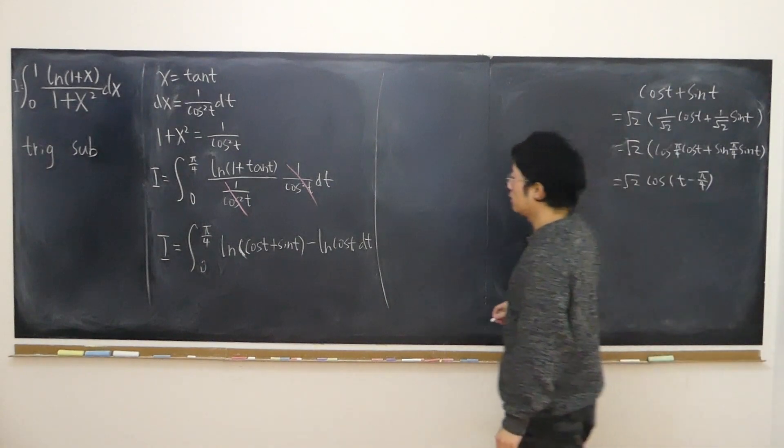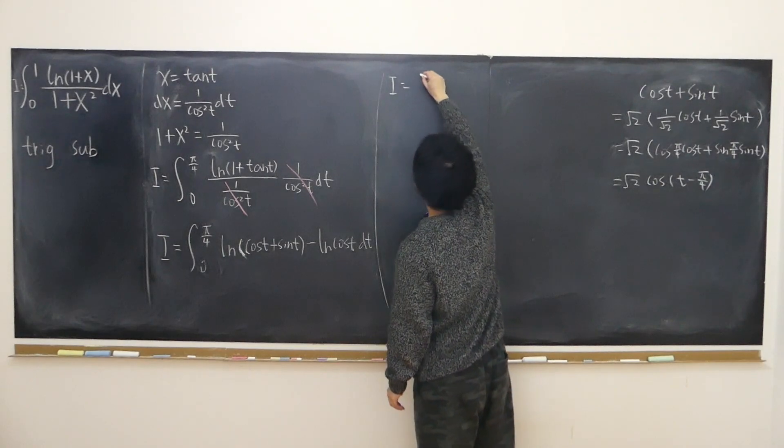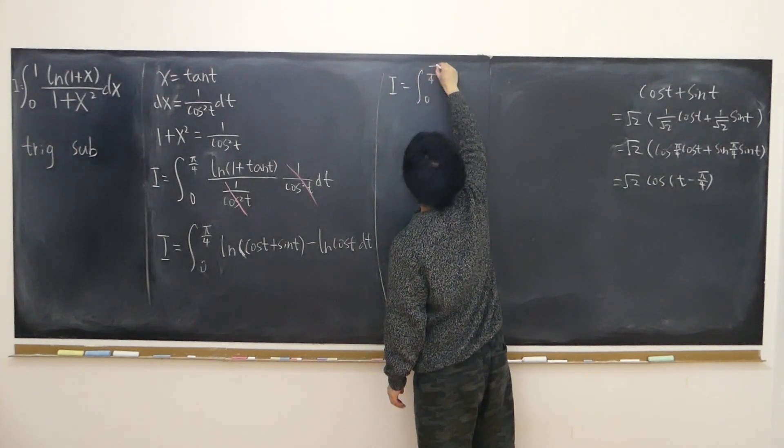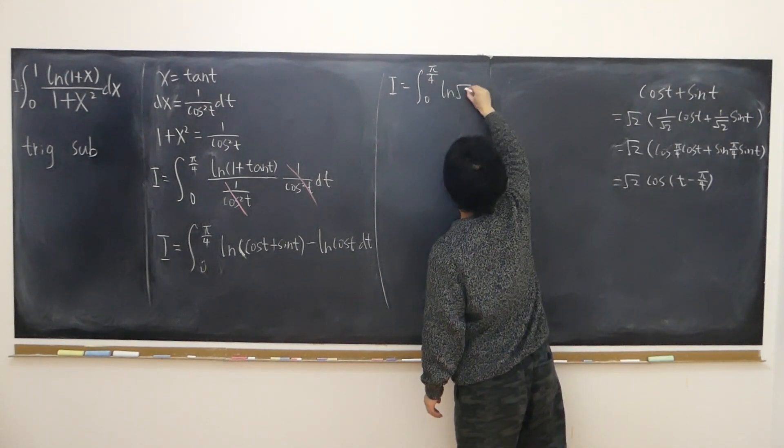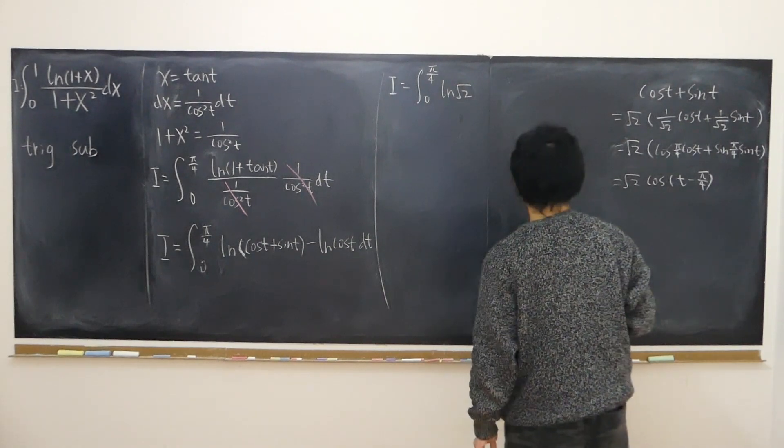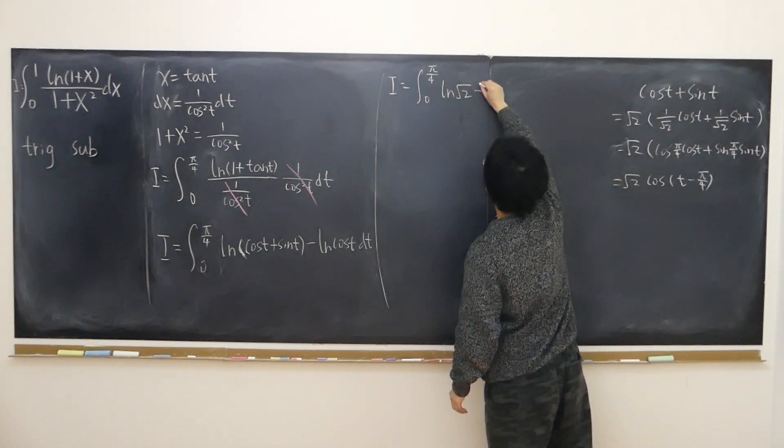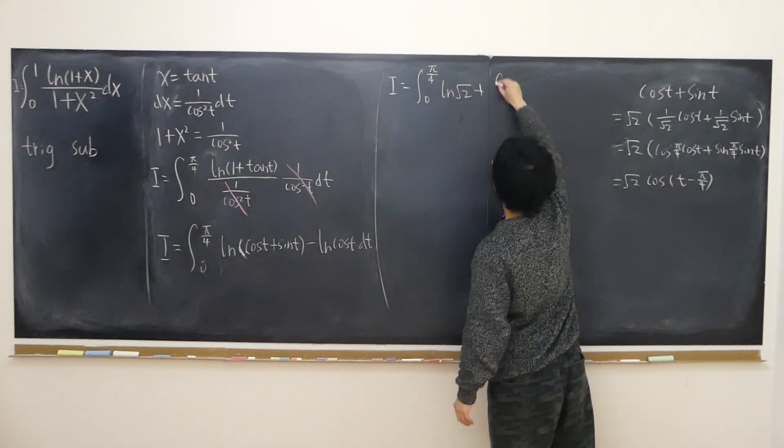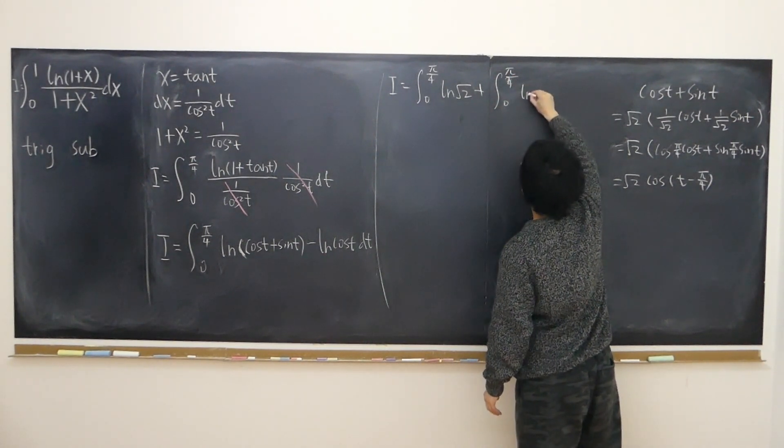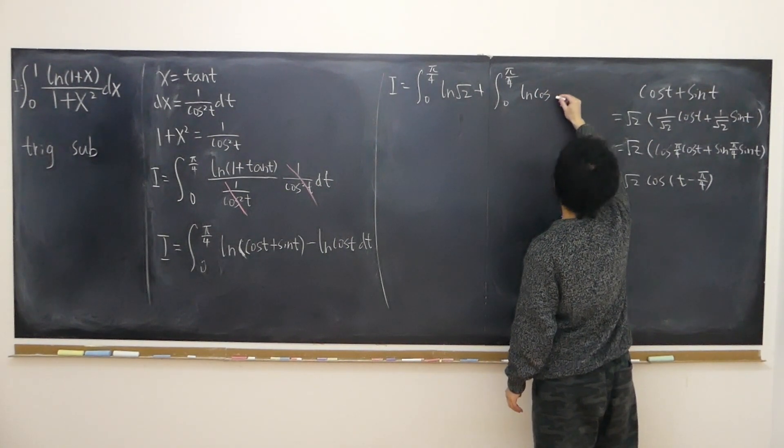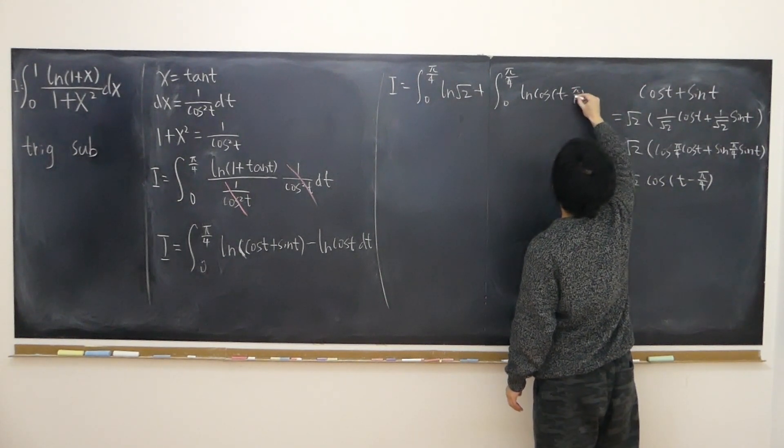And now my integral becomes i equals 0 to pi over 4 log of square root of 2 times cosine. So using logarithm rule becomes the sum of logarithm, plus splitting the integral 0 to pi over 4 of the logarithm of cosine of t minus pi over 4 dt.